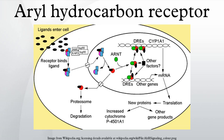One assumption made in the search for an endogenous ligand is that the ligand will be a receptor agonist. However, work by Savett et al. has shown this may not be the case, since their findings demonstrate that 7-ketocholesterol competitively inhibits AHR signal transduction.